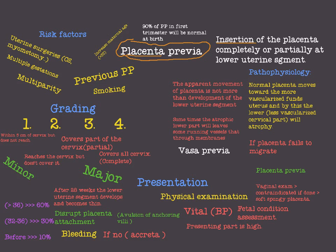Placenta previa is an insertion of the placenta completely or partially at the lower uterine segment. The placenta normally should not be at the lower uterine segment. To call it placenta previa, it should occur after 28 weeks, because more than 90% of placenta previa cases in the first and second trimester will be normal at birth date.